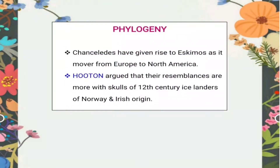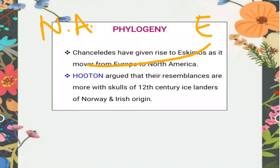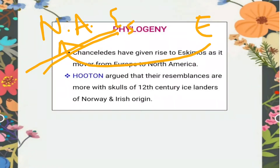Talking about phylogeny, based on the physical and cultural similarities between Eskimos and the Chancelade people, it is claimed that following the retreat of the ice sheet towards the north at the closure of the glacial age, Chanceladeans gave rise to Eskimos as they moved from Europe to North America, transforming with certain new modifications into the present-day Eskimos.